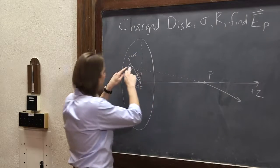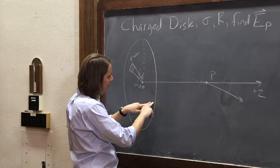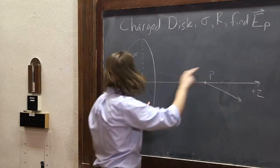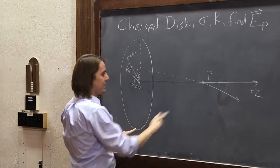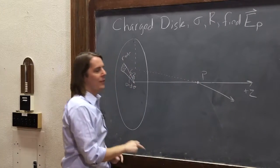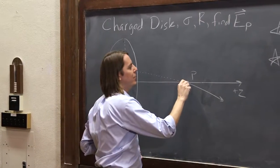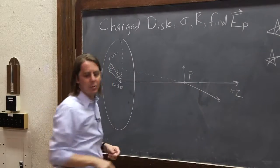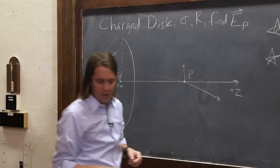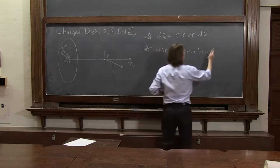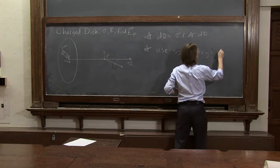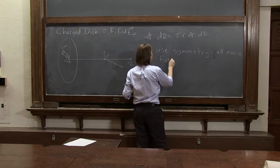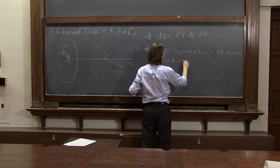But we also know that somewhere else around the sphere, or around the disk, is another charge that would make one pointing like that. And this would make one pointing down, and this would make one pointing up, and those would all cancel. This component of the field for all these different ones would cancel, and you'd only be left with a z-component. So let's use symmetry, and what it tells us is all non-z field cancels.